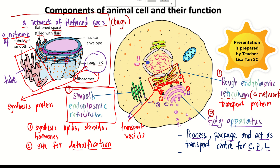The Golgi apparatus receives proteins from the rough ER and lipids from the smooth ER. Carbohydrates also come from the smooth endoplasmic reticulum. The Golgi can modify, mix, and process carbohydrates with protein to form glycoprotein. It can also process carbohydrate together with lipid to form glycolipid.